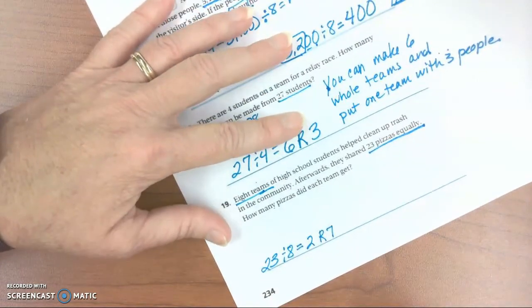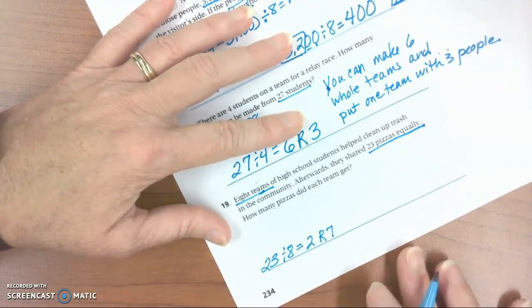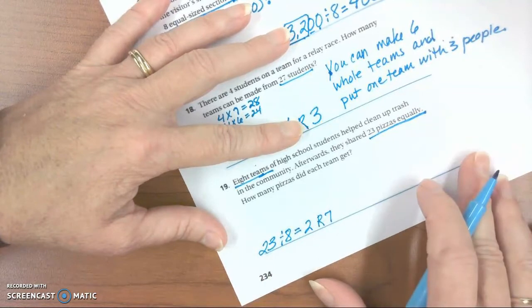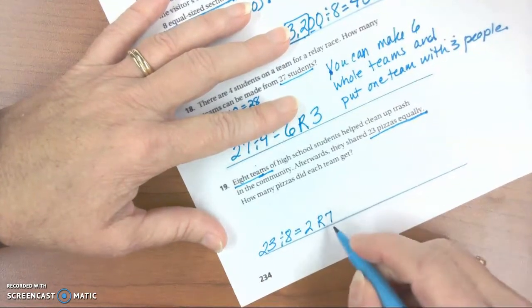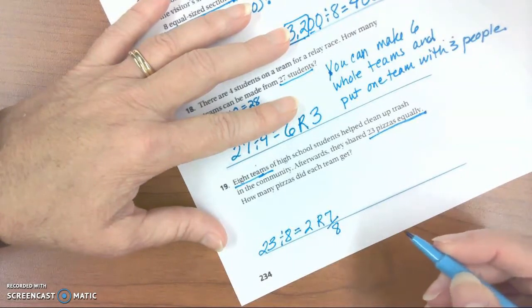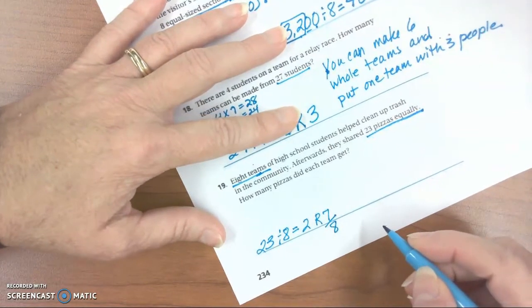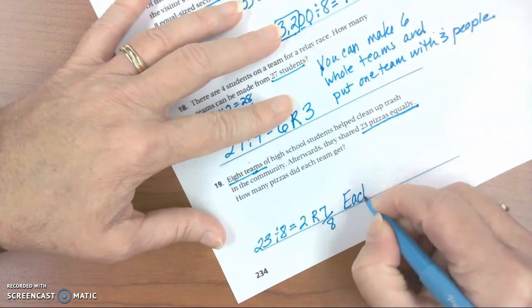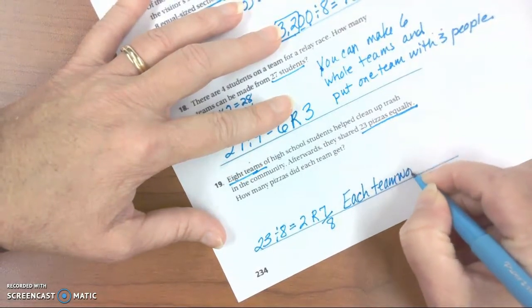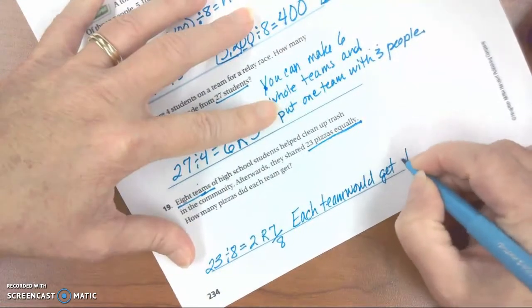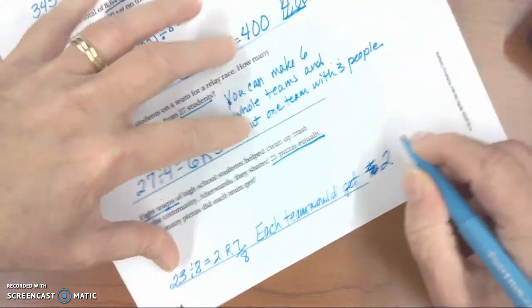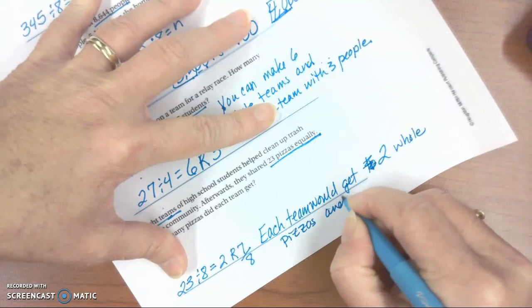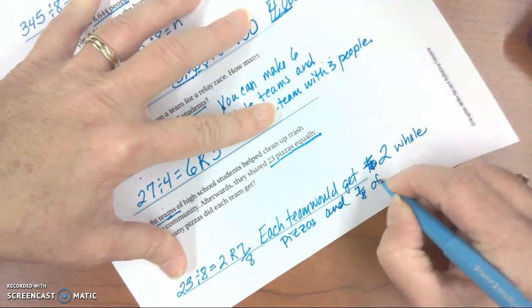Well, what are we going to do with those 7 pieces? Are we just going to keep them to the side? No, we're going to have to interpret that remainder. Now, the actual standard for 4th grade does not require students to write this as a fraction, which would be we have 7 out of 8 that we needed. So we'd have 2 and 7/8. But you can explain that in your writing. So each team would get 2 whole pizzas and 7/8 of another pizza.